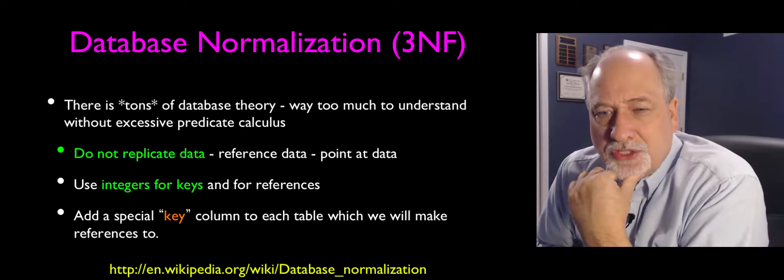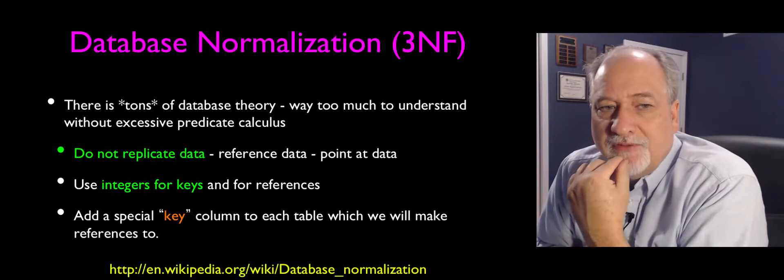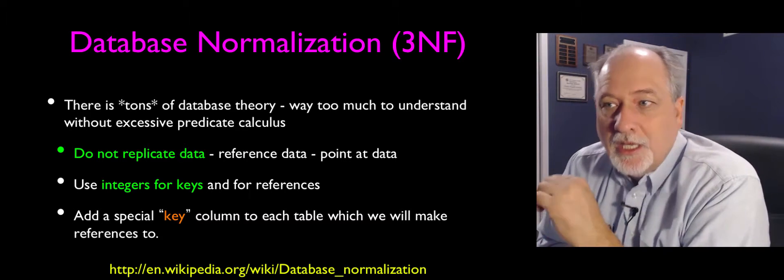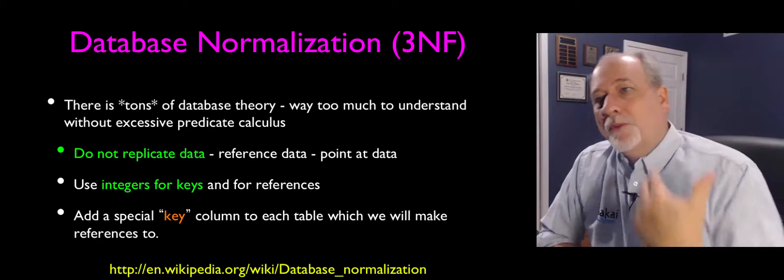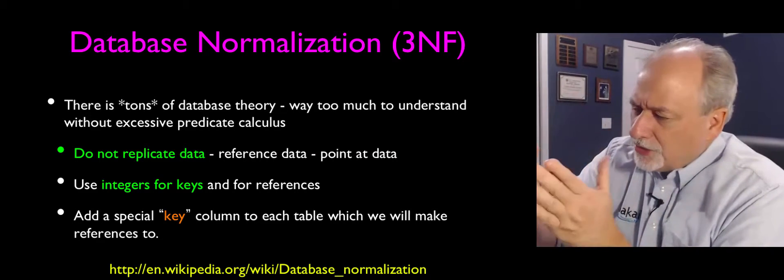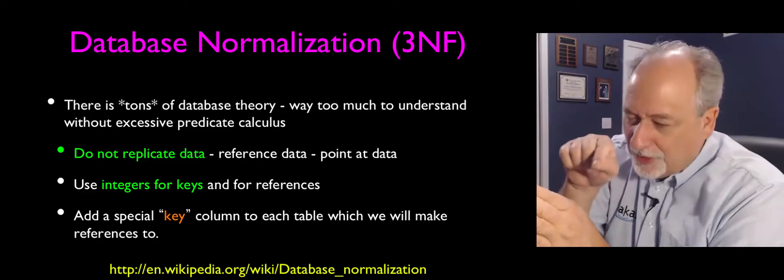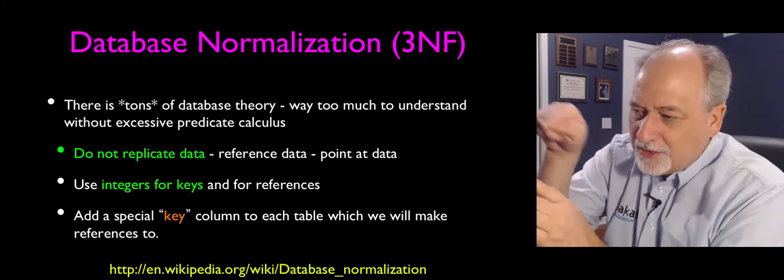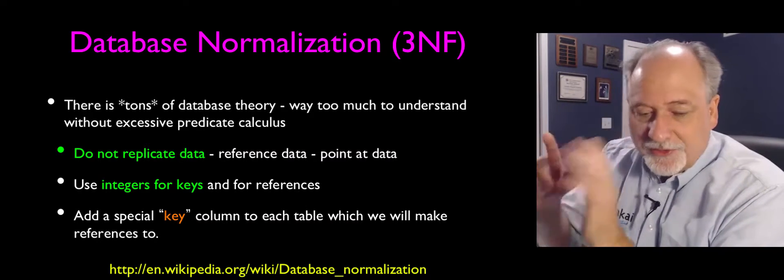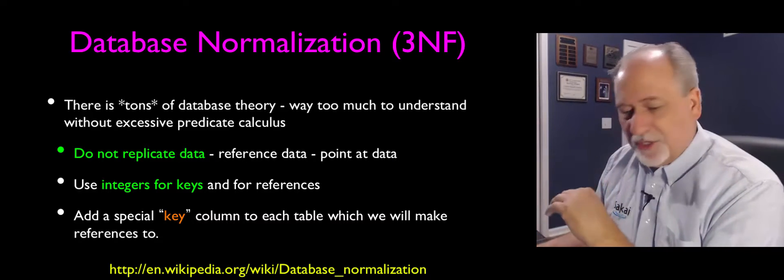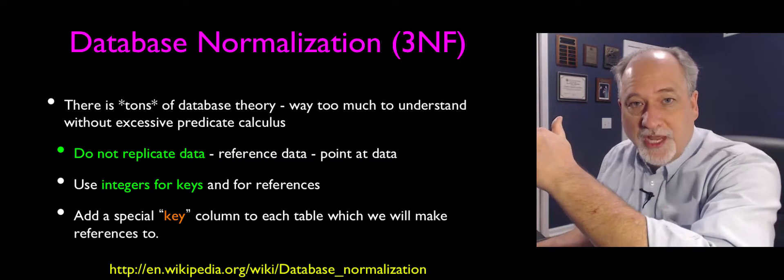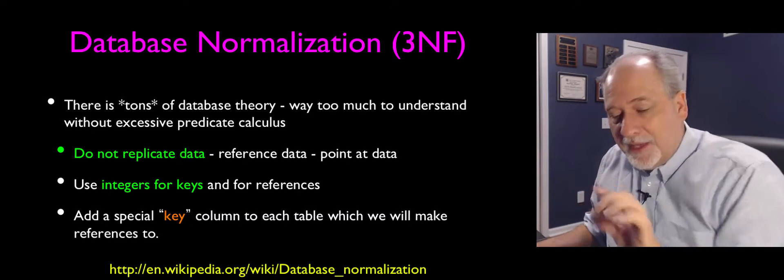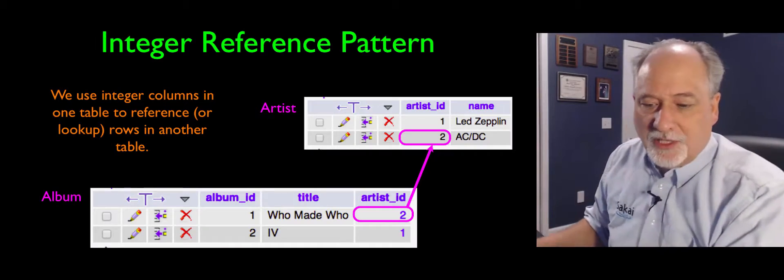So we don't replicate string data, we reference the data, we point at it, and we use integer numbers for this. Integers are stored very efficiently, they're sorted very efficiently, they're accessed very efficiently. And so we have numbers that represent these little arrows. And what we do to take Charles Severance is we add a little key to it, a little number field.